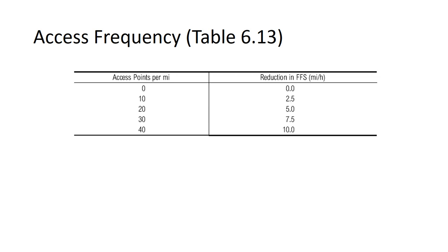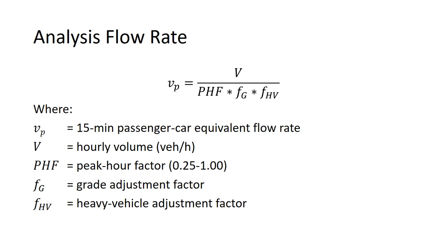An access point is either a public road or a driveway. For the analysis flow rate V sub P, we start with the gross volume V — peak hour volume including all vehicle types. We divide by the peak hour factor, which adjusts for the peak 15 minutes of the hour, the grade adjustment factor F sub G, and the heavy vehicle factor F sub HV. The result is the passenger car equivalent flow rate.